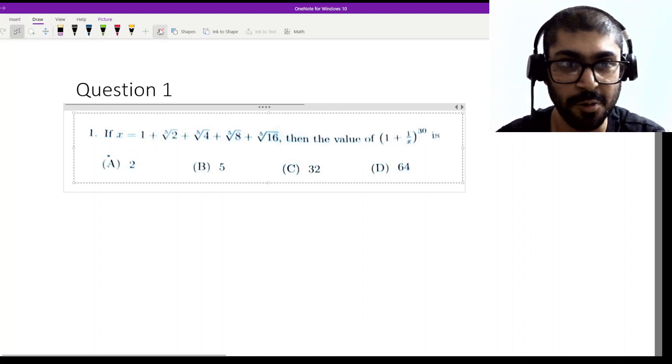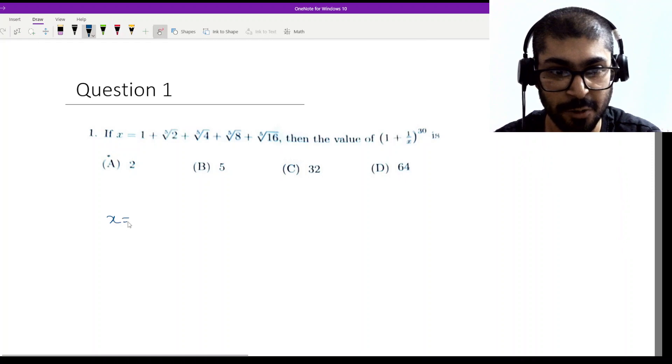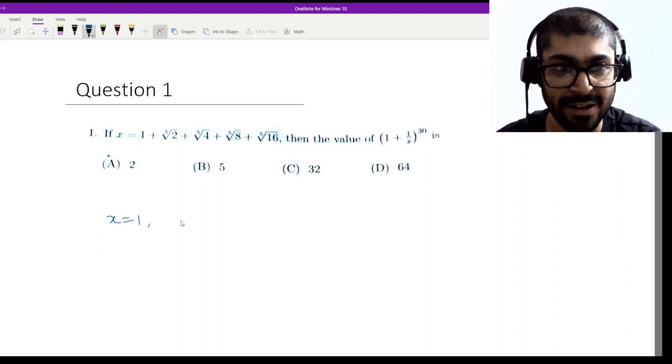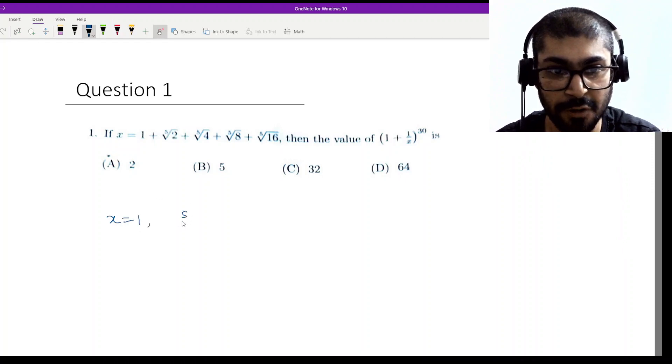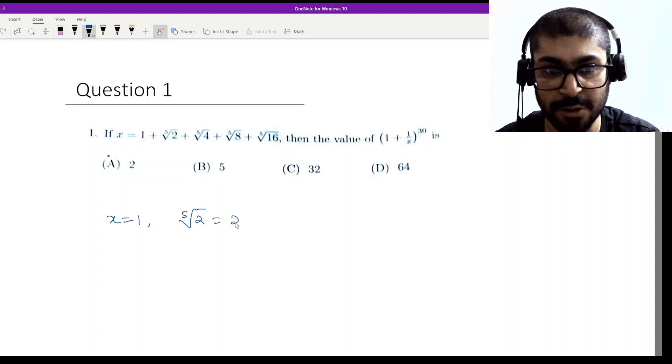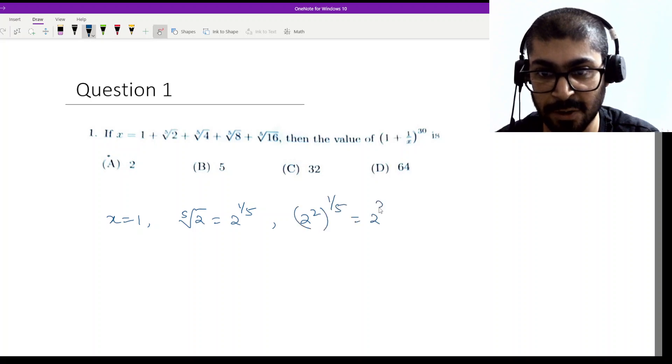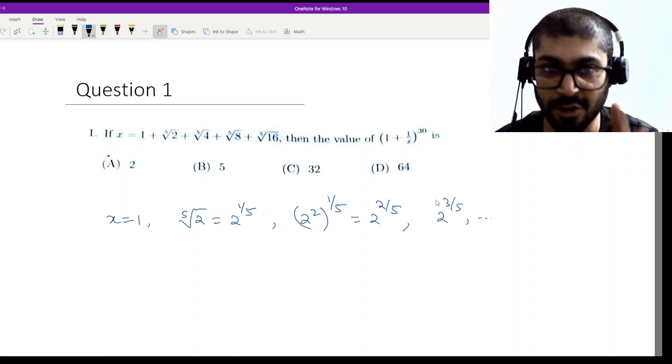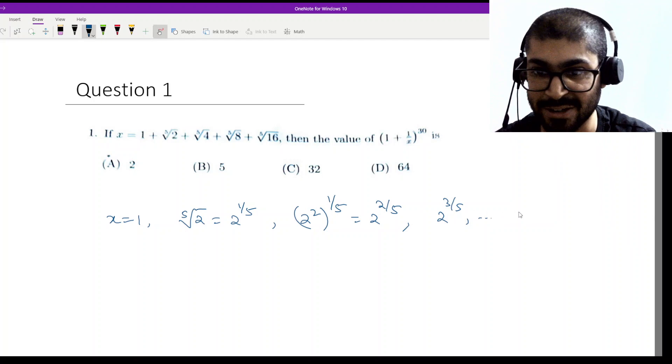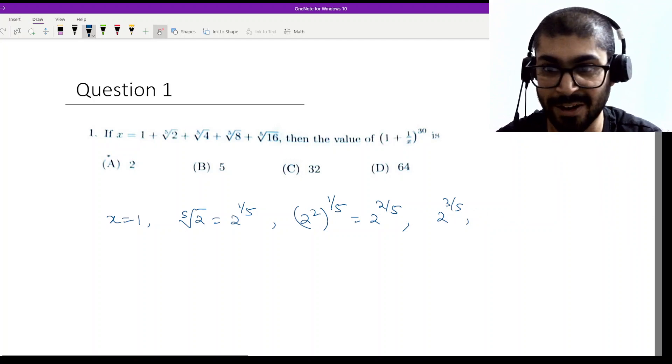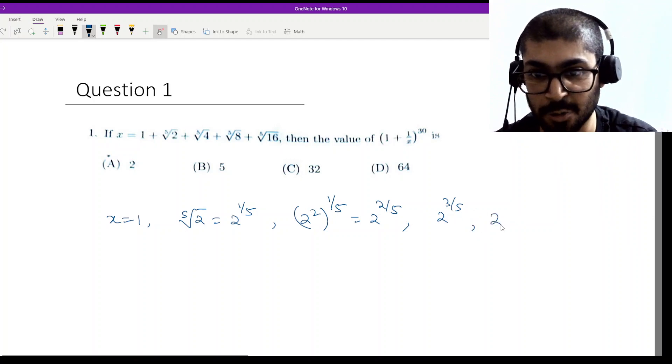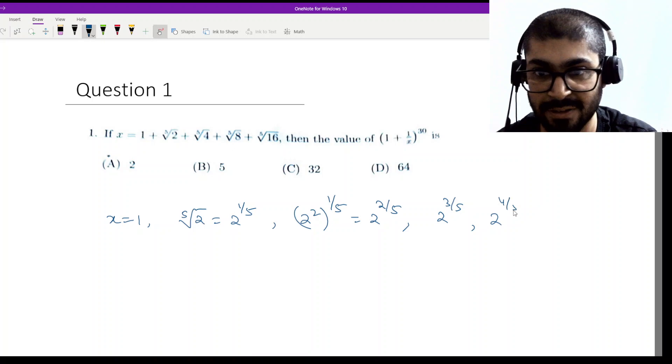So you have x equal to 1. Then the next term is fifth root of 2, so this is basically 2 to the power 1 by 5. And then I have 2 to the power 2 by 5, and then 2 to the power 3 by 5 and so on. It doesn't go on to infinity, it stops there on the next term itself. So instead of dot dot dot, I can just end it there at 2 to the power 4 by 5.